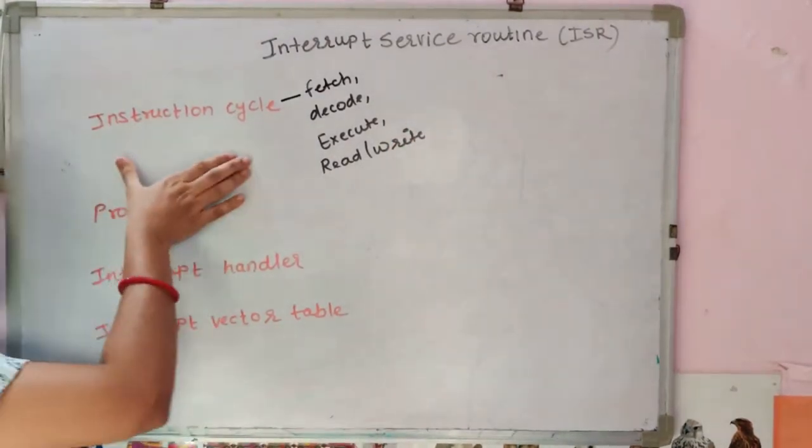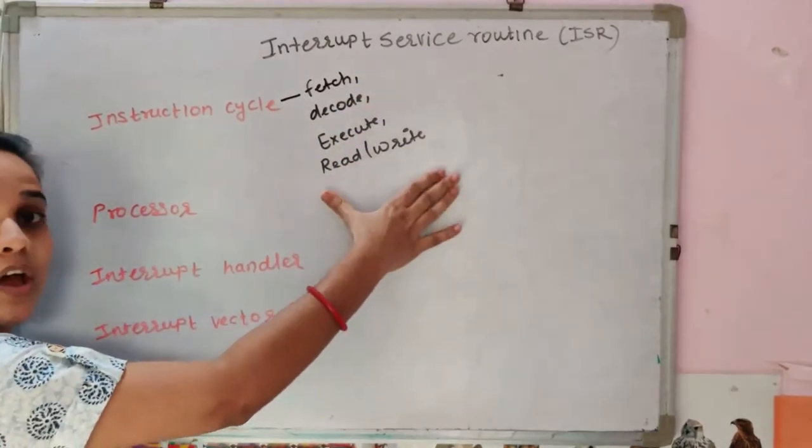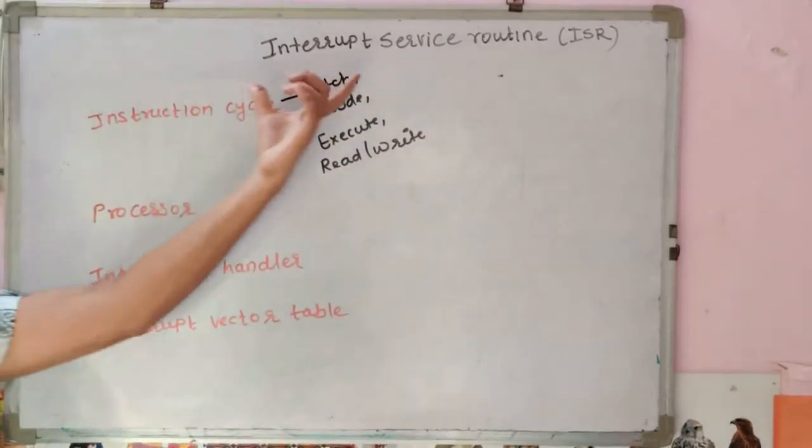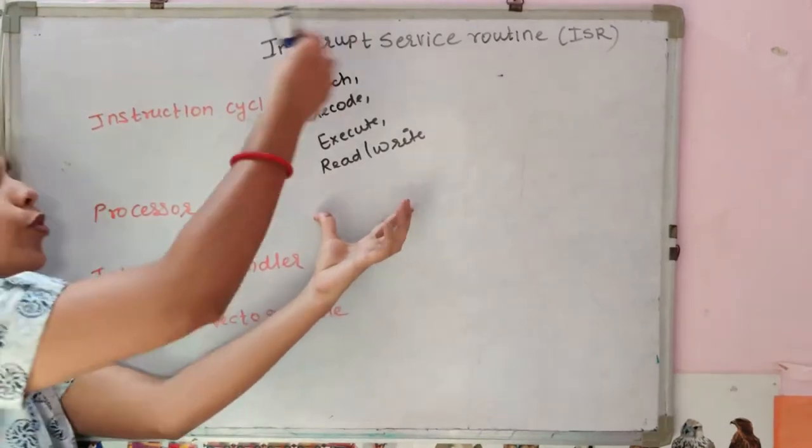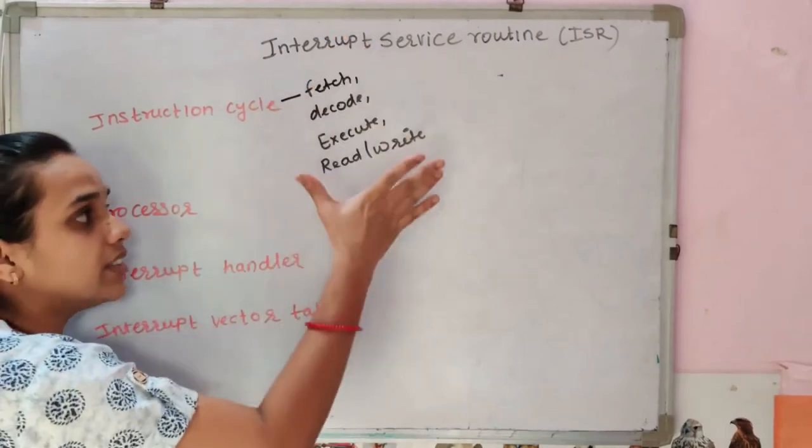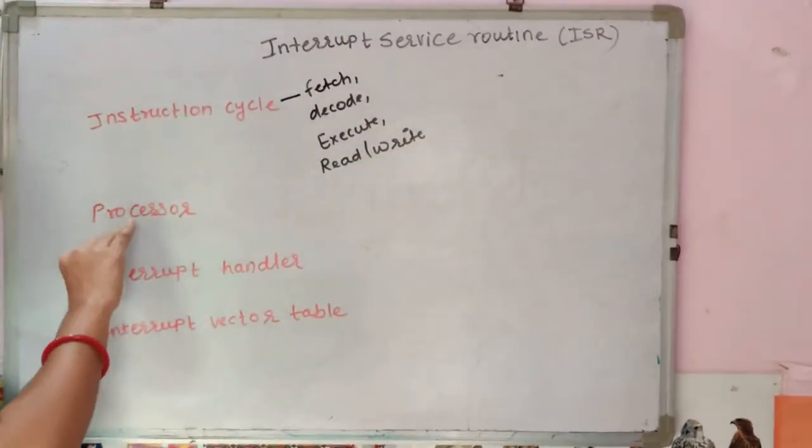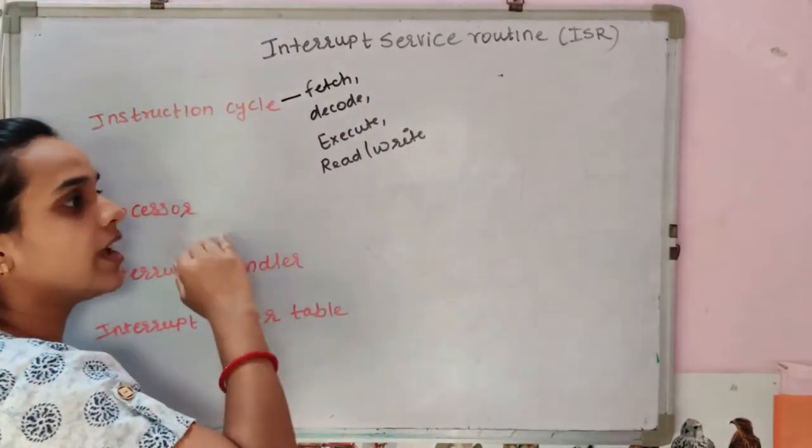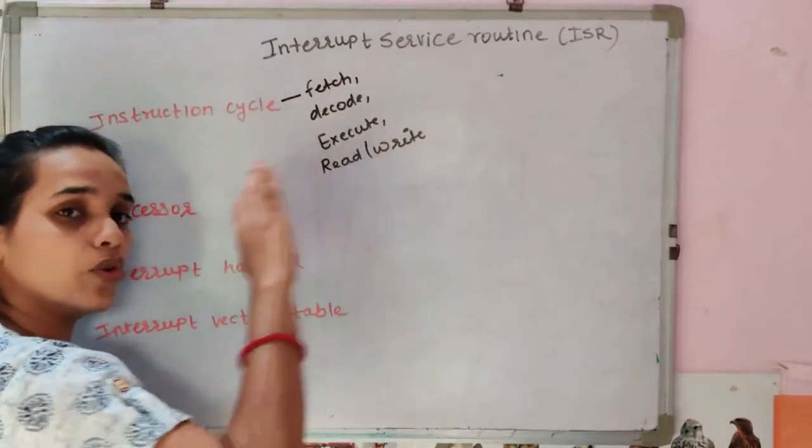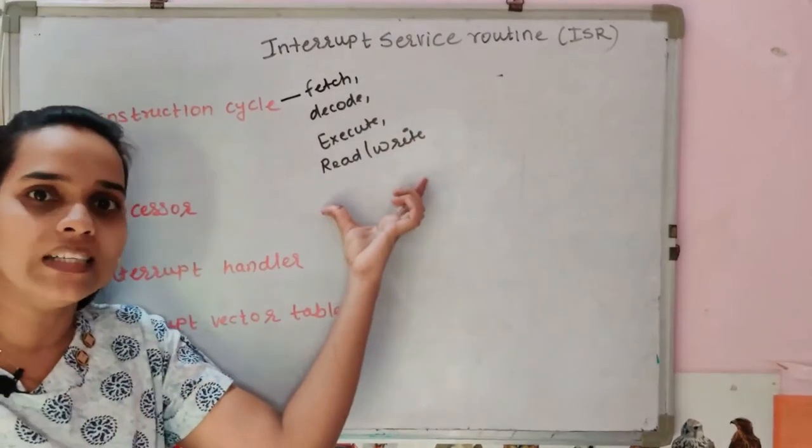What is instruction cycle? Instruction cycle consisting of fetching, decoding, executing and read write the functions. These steps are the same. You will get complete and create a cycle. This cycle is not complete until the processor completes, it will not check for the next instruction or next interrupt. This is a complete cycle.